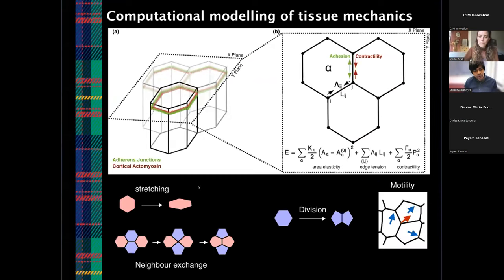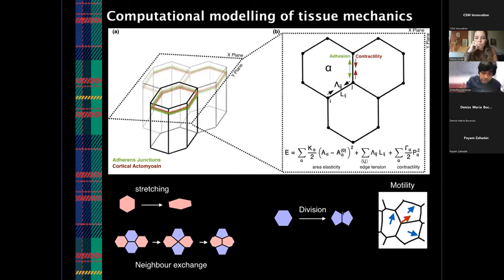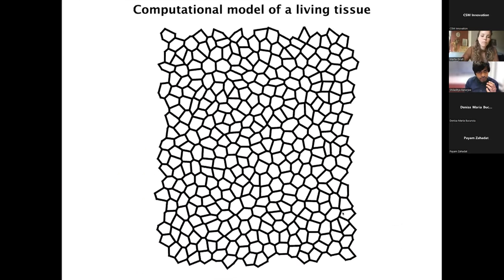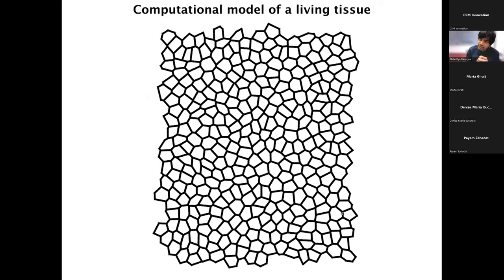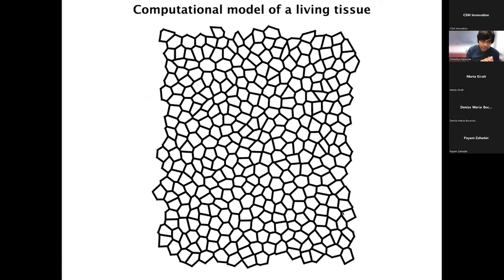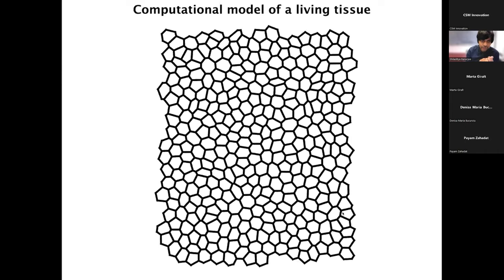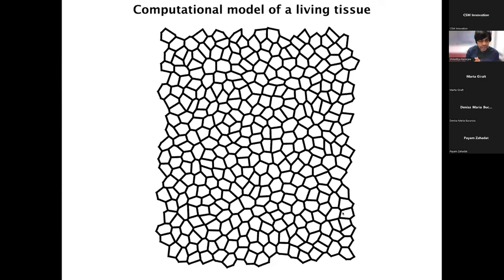Cells have a life cycle — they grow, divide, form new cells. We have to include all of these features in a computational model: division, motility, stretching, neighbor exchange. The output is an example of the dynamics predicted by the model where you see individual cells moving around, dividing, undergoing neighbor exchanges, and so on. My group uses this type of modeling framework and applies it in different biomedical and biological contexts.